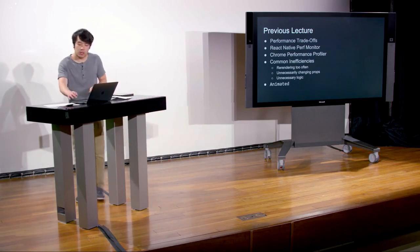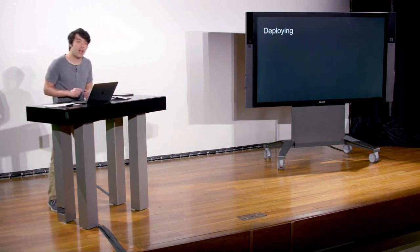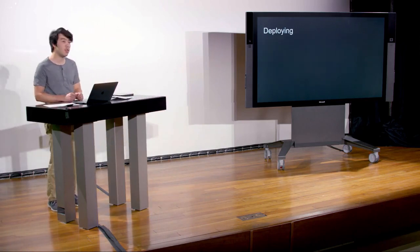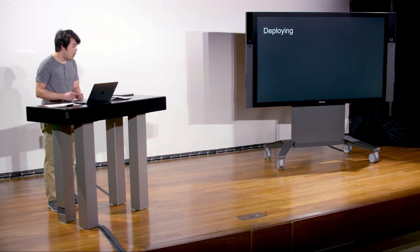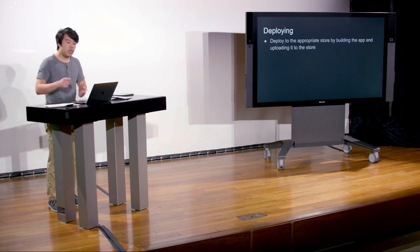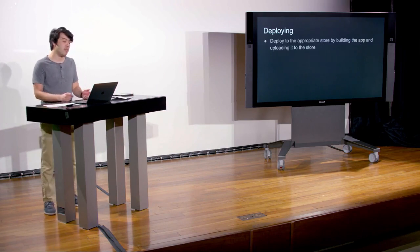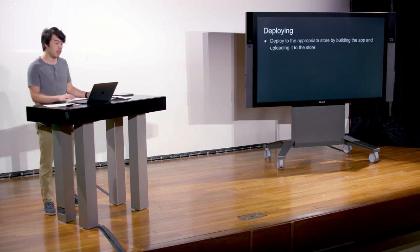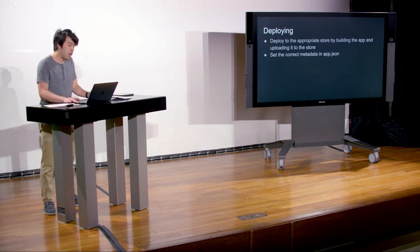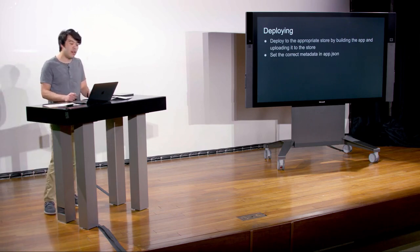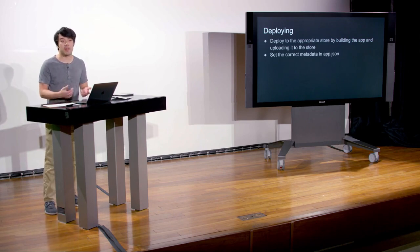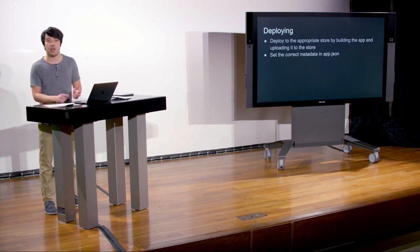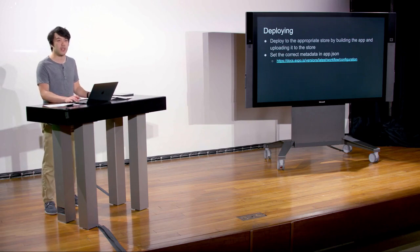This week we'll give a high-level talk about deploying apps. The way that you deploy in Expo is by building the app locally and then uploading it to the store. Before you do that, you have to make sure to set the correct metadata in your app.json file. You can find out exactly what those are at the Expo documentation link.